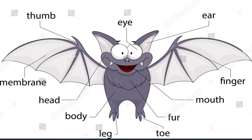Here we have the body parts of a bat. As you can see, its wings are not like the wings of an insect or a bird. Rather, it is more like its arm, which has membranes in between the fingers. The membranes are like a thin skin, which enables it to fly.